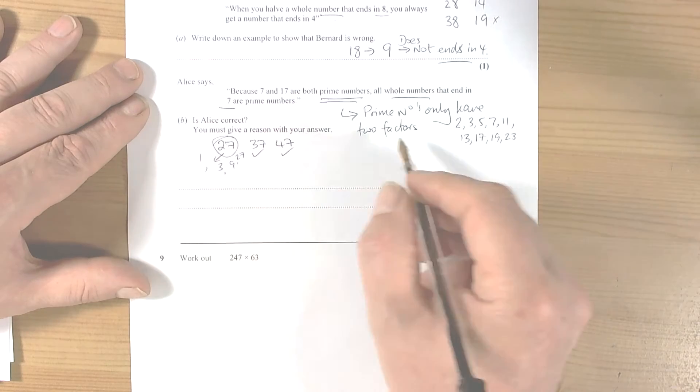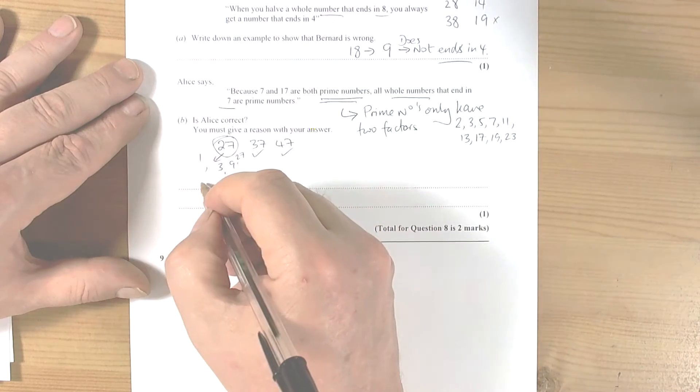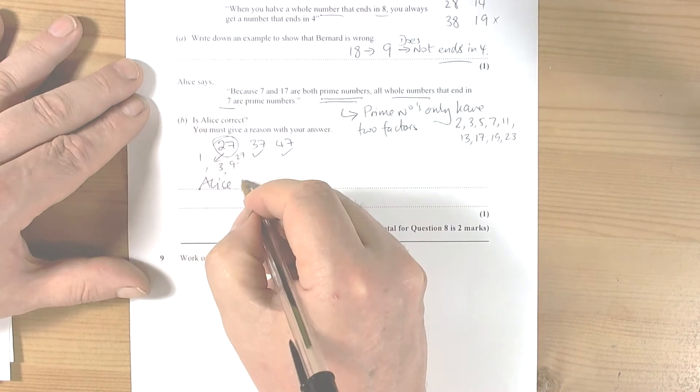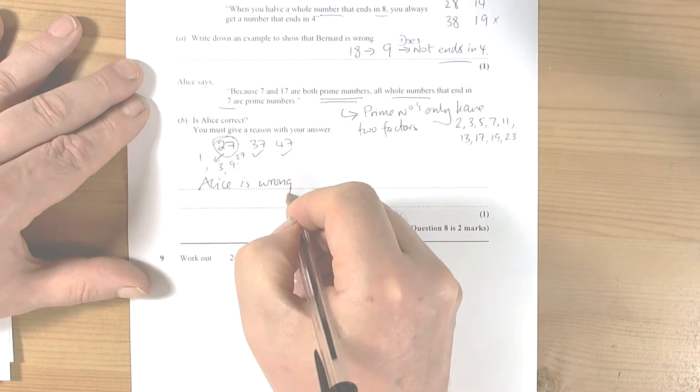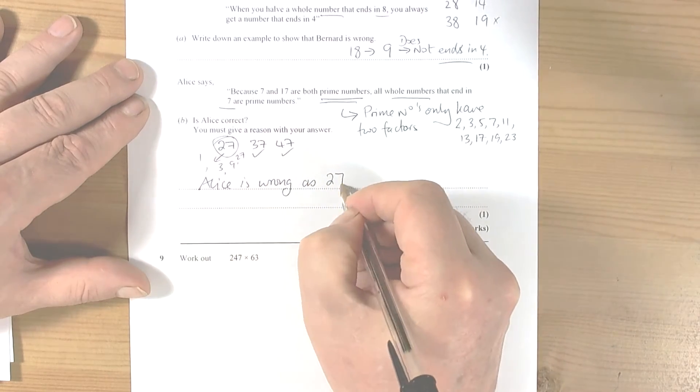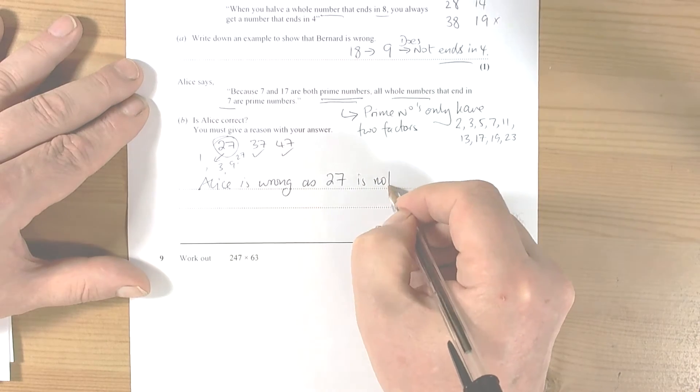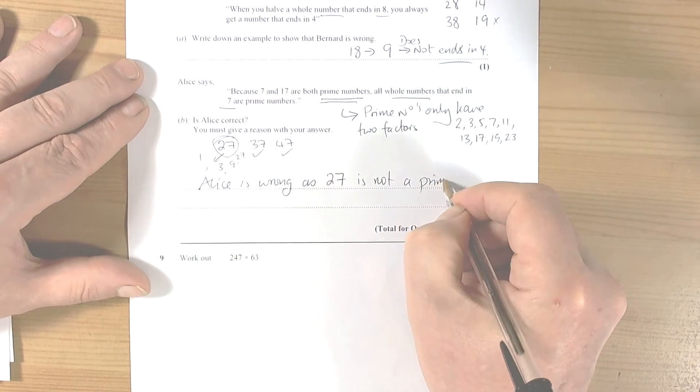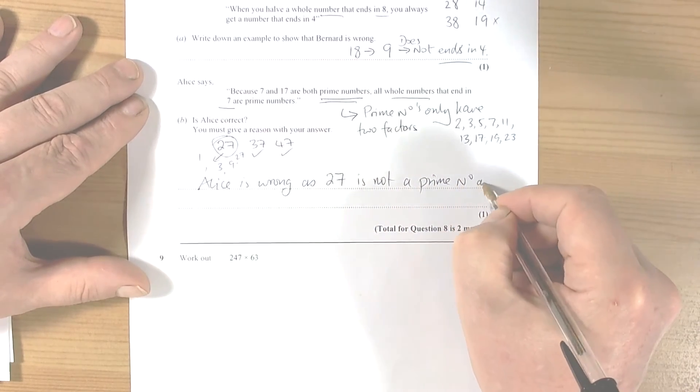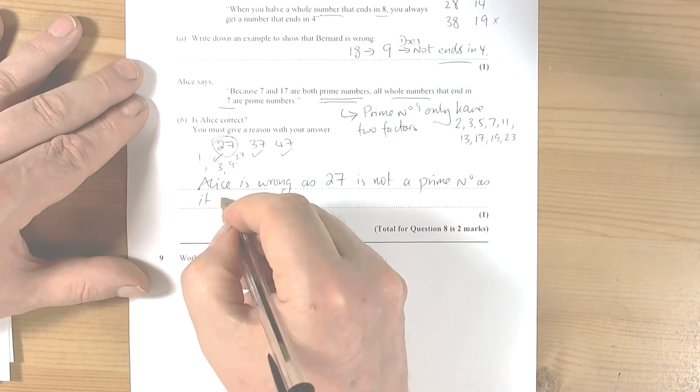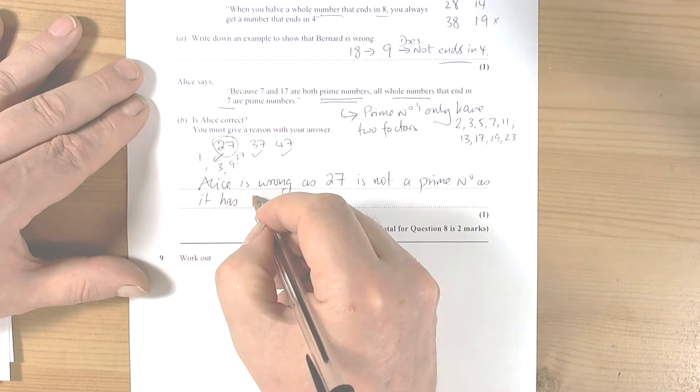So when it says you must give a reason for your answer, you're going to say Alice is wrong as 27 is not a prime number as it has four factors.